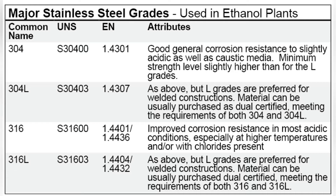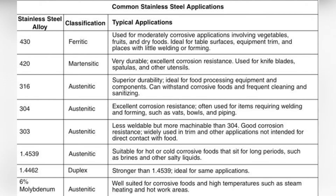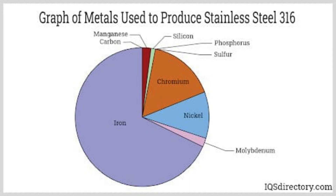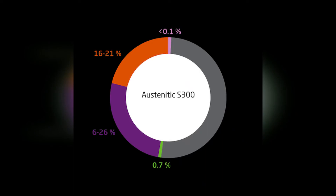Nickel helps to stabilize the microstructure, increasing stress corrosion cracking resistance. Manganese in moderate quantities, and in association with nickel, will provide many functions attributable to nickel and help prevent pitting. The addition of molybdenum — the additional element in type 316 that increases its performance with respect to type 304 stainless steel — helps increase resistance to pitting and crevice corrosion.